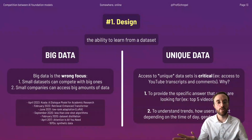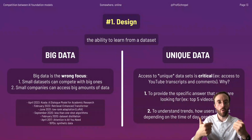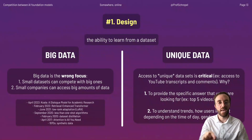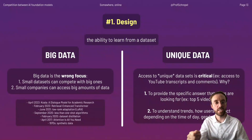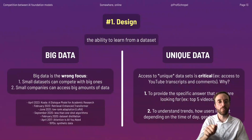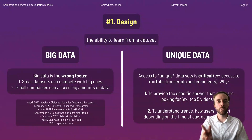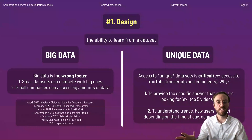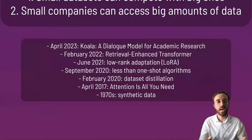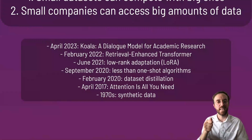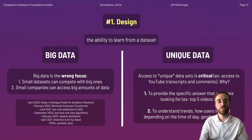To understand the dynamics, we first have to look at design — the ability to scale because models are well-coded, well-constructed, and the learning is efficient. That ability to learn is dependent on big data and unique data. Although big data is a necessary condition to compete, it is far from sufficient to take over competitors. Small datasets can actually compete with big datasets, and small companies can access large amounts of data. We've listed papers showing how open source projects do more with the data they already have.